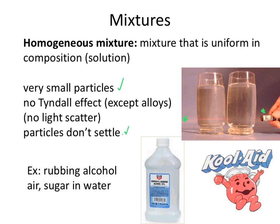Some examples of homogeneous mixtures include rubbing alcohol — the container will show 70% or 90% isopropyl alcohol, indicating the ratio of alcohol to water in that sample. Air is an example of a gas-gas mixture, containing nitrogen, oxygen, and various other gases in different proportions. Sugar and water or Kool-Aid and water would be an example of a solid mixing with a liquid to create a uniform mixture with small particles and no settling.